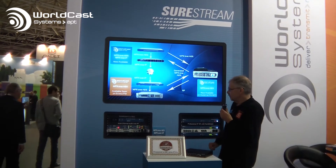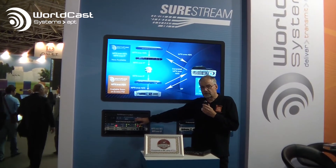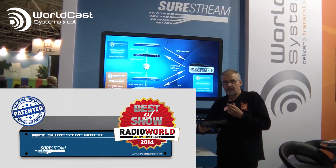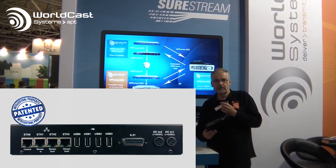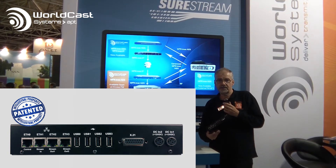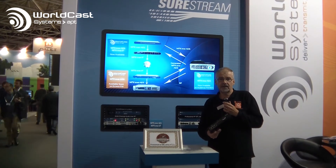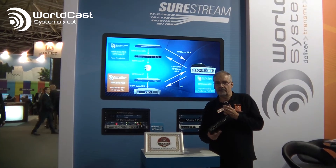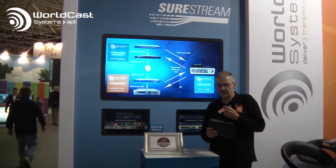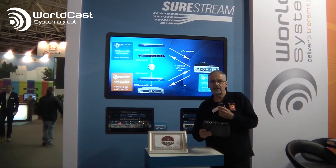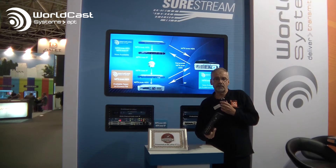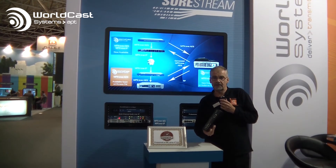Now that SureStream software is available in the SureStream box. We have an example here — you can see there are RJ45 connectors, and we can connect any IP codec to the box. It might be an old APT codec, or it might be a codec from another manufacturer that doesn't offer proper redundant networking. We connect this locally, and then this provides an interface to dual wide area network connections for completely redundant networking.